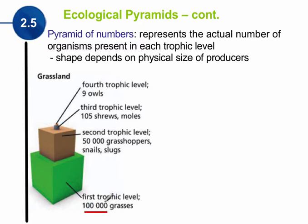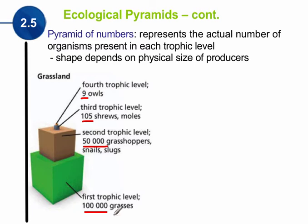In the grassland pyramid of numbers, the first trophic level has 100,000 grasses, represented by the green cube. Those 100,000 grasses can support 50,000 grasshoppers. Those 50,000 grasshoppers, snails, and slugs can support 105 shrews. Working up to the higher trophic level, we get down to 9 owls. So using the pyramid of numbers, we can see that it takes 100,000 grasses to support 9 owls.